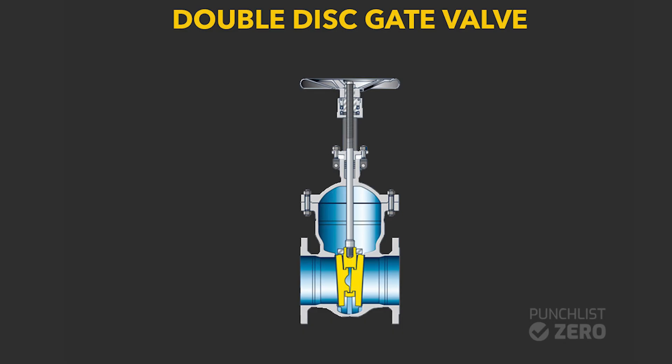The double disc gate valve consists of parallel seats where the wedge is controlled when the gate is closed. The formation of a tight seal between the seat and disc controls and directs the fluid pressure that is built, forcing the disc against the seat.